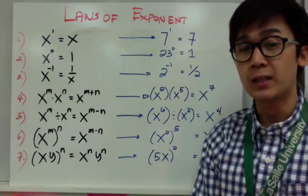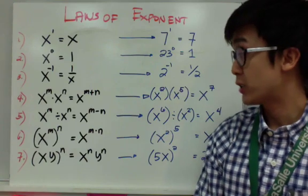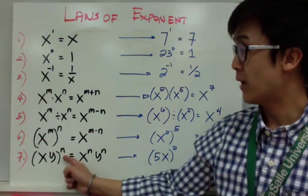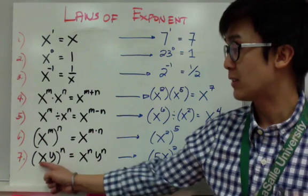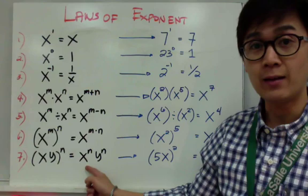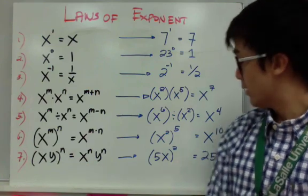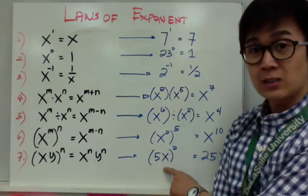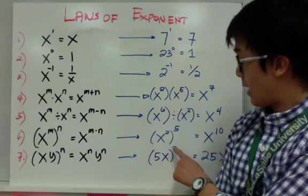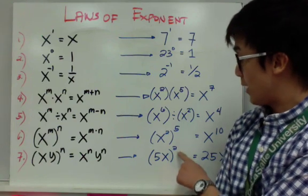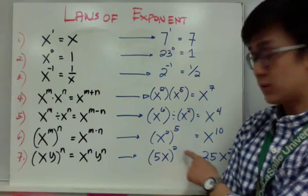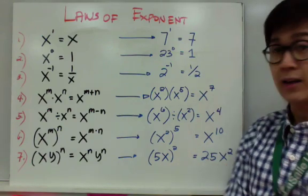For number 7, an exponent can be distributed to your expression. So if I have the quantity xy raised to n, you distribute n to x and n to y, giving you x to the n times y to the n. So if I have the quantity 5x raised to 2, I distribute 2 to 5 and 2 to x, so 5x raised to 2 is simply 25x squared.